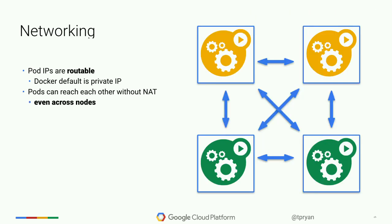Last concept: networking. In Kubernetes, all pod IP addresses are routable. Docker by default uses private IPs — to talk to another container, you have to go through the main Docker host. In Kubernetes, pods can talk to each other directly across physical machines. If you've got 12 machines in a Kubernetes cluster, no matter where they are, they can all talk to one another.